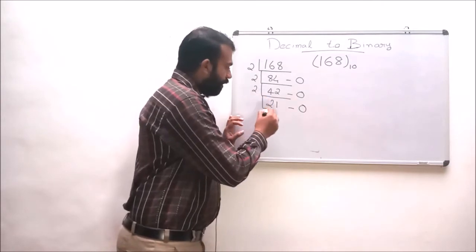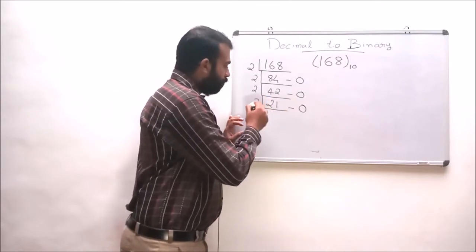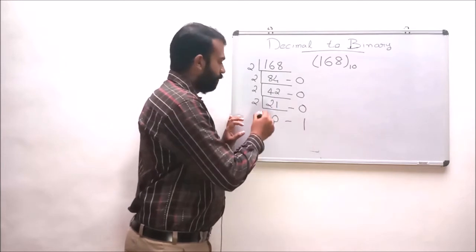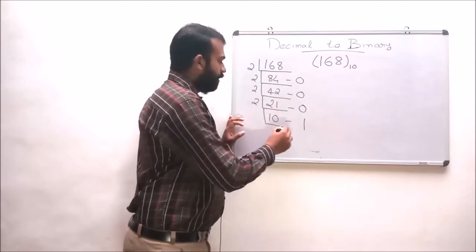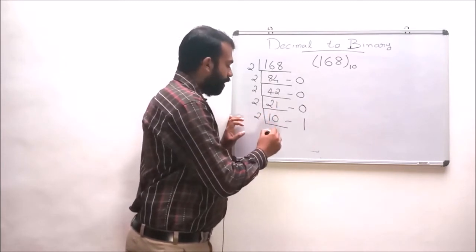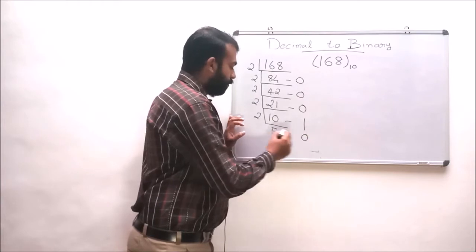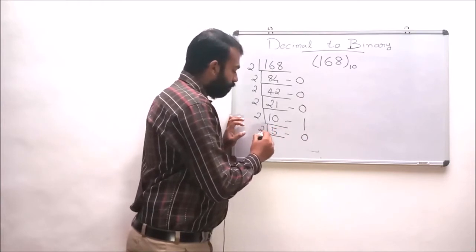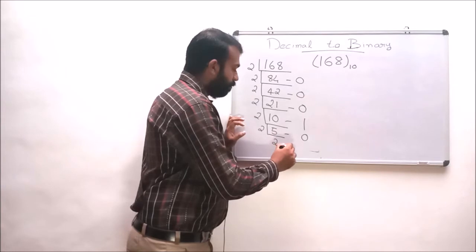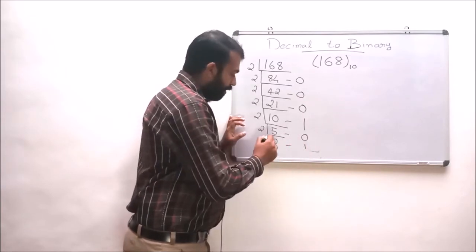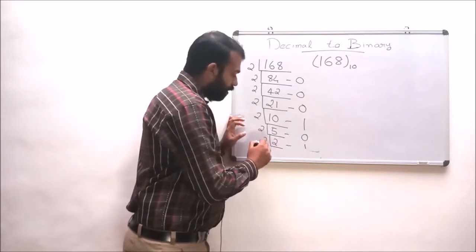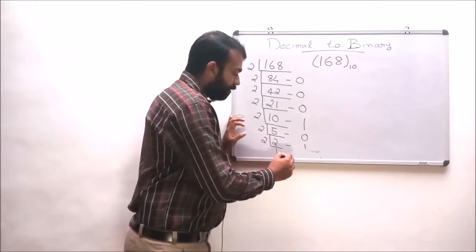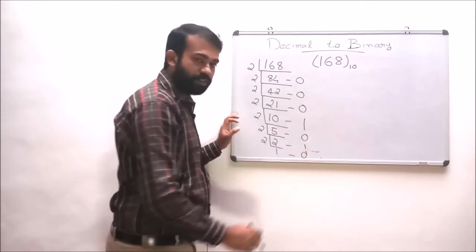Dividing 21 by 2 gives 10 with a remainder of 1. Dividing 10 by 2 gives 5 with a remainder of 0. Dividing 5 by 2 gives 2 with a remainder of 1. And finally, dividing 2 by 2 gives 1 with a remainder of 0.